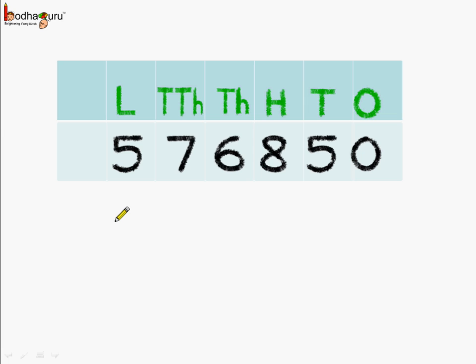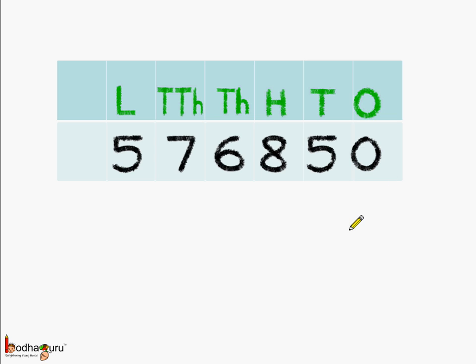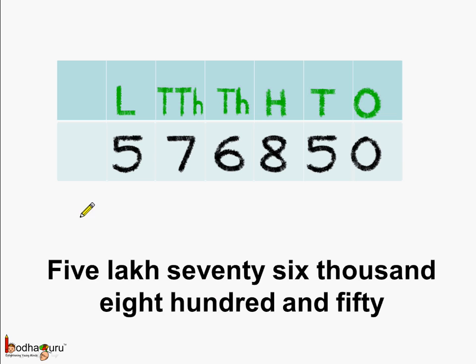So what is it equal to? We can say 5 lakh, 76,850. As there is a 0 in the 1's place, it is not read. So the number is 5 lakh, 76,850. Understood?